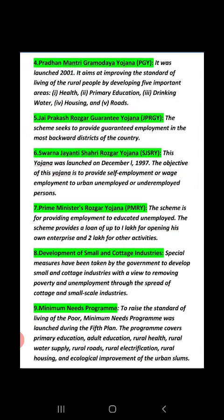Next is the Prime Minister's Rozgar Yojana — PMRY. Under this policy, a loan of rupees 1 lakh is given to those willing to open their own enterprises, and a loan of rupees 2 lakh for other activities. This Yojana was started to promote self-employment so that unemployment can be removed. The eighth program was development of small and cottage industries — set up to remove poverty and unemployment through the spread of cottage and small-scale industries.